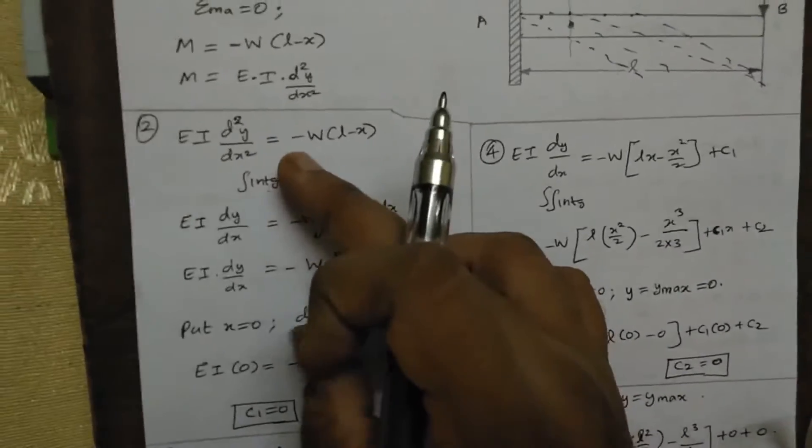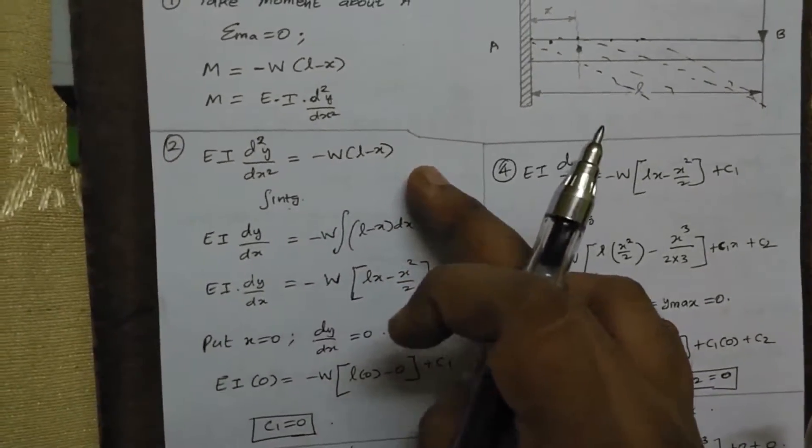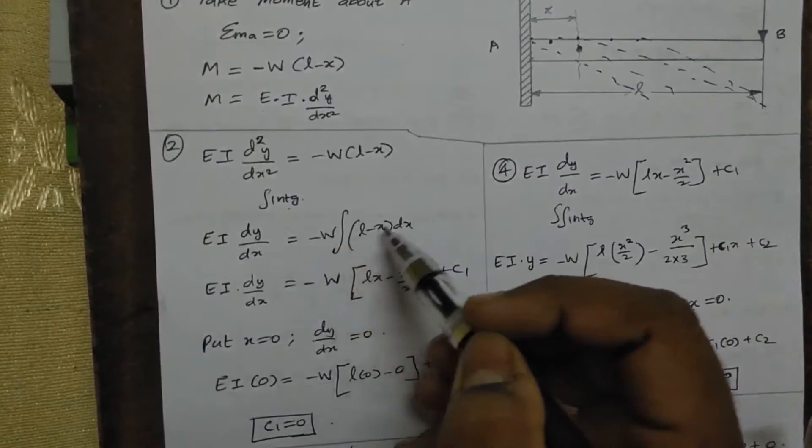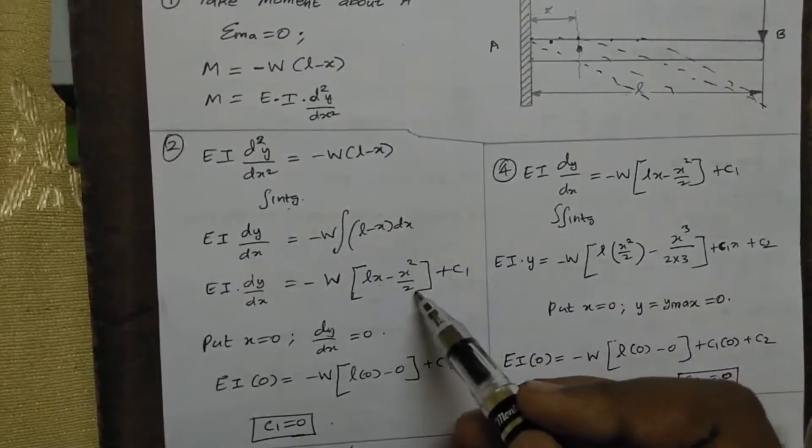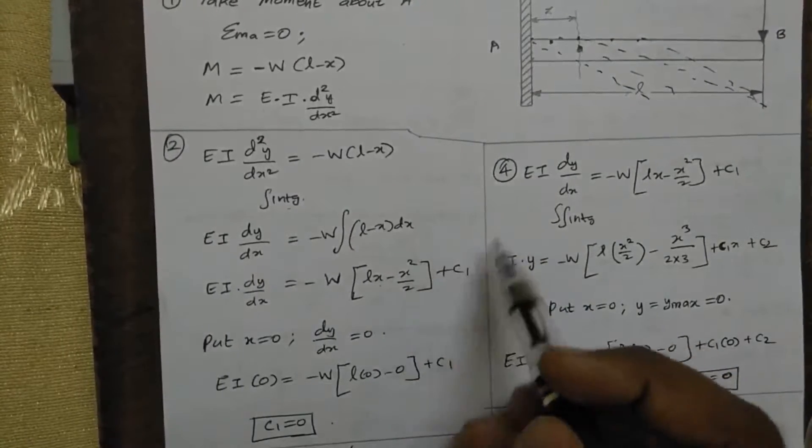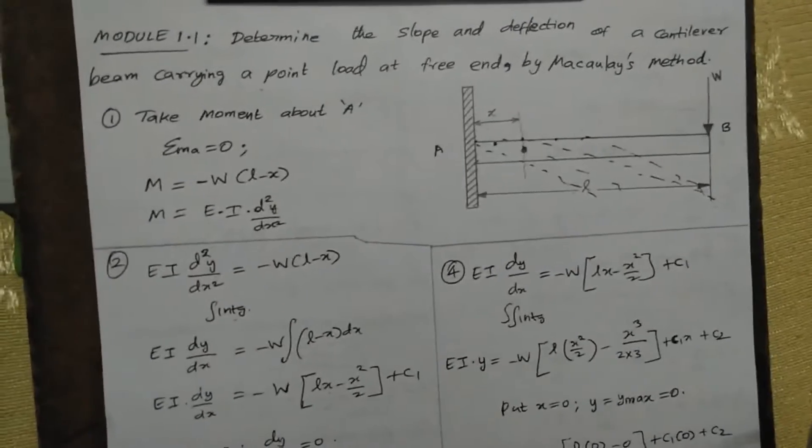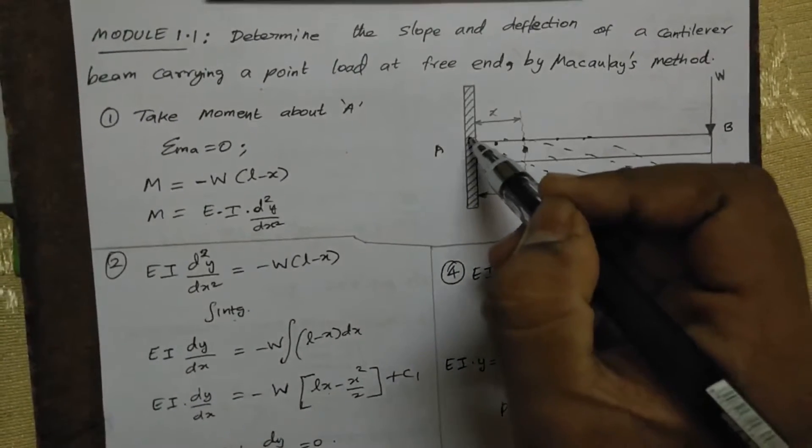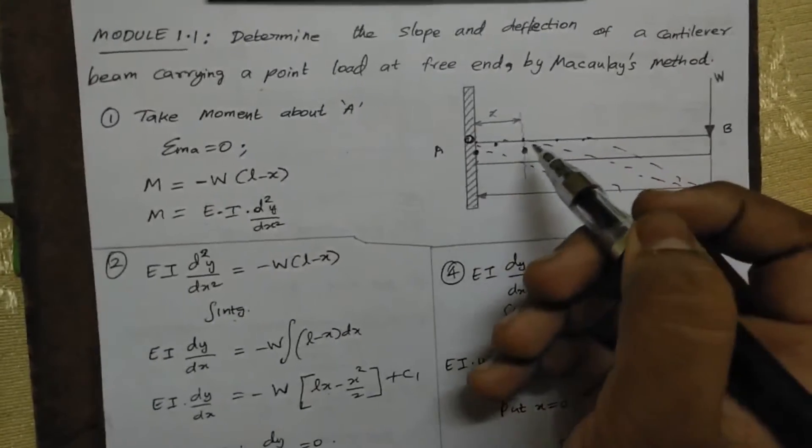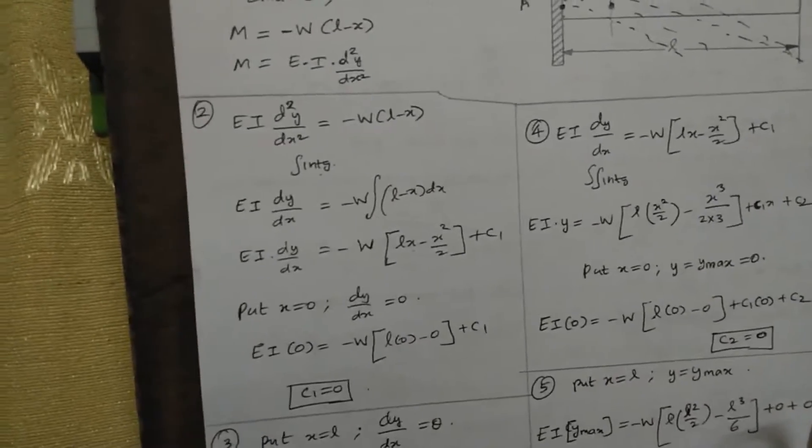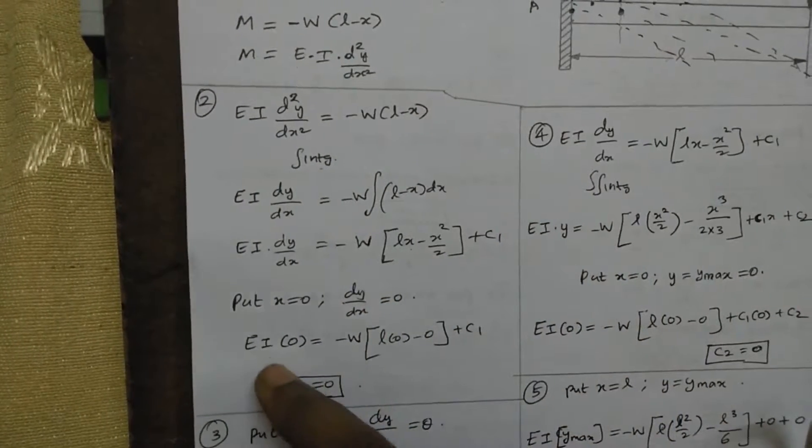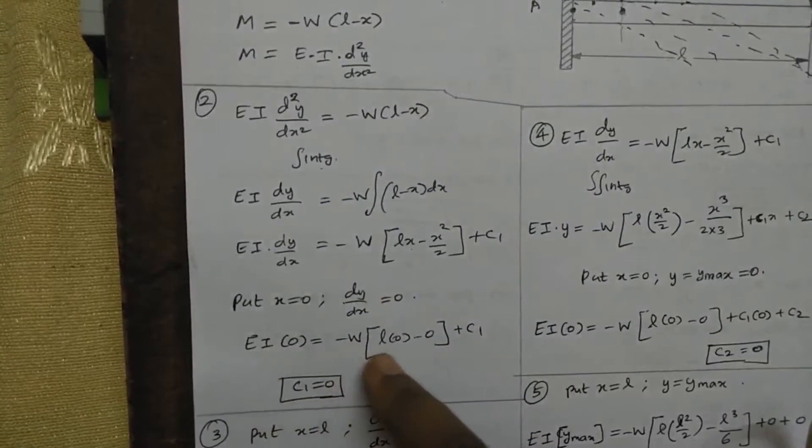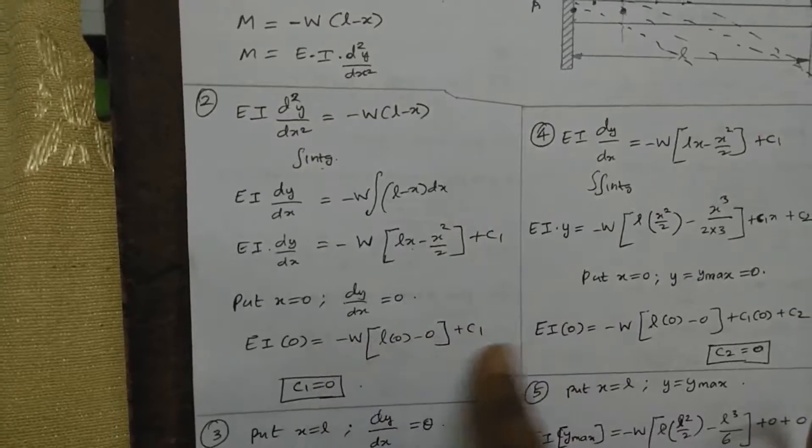First integration: EI times dy/dx equals minus W(Lx minus x²/2) plus C1. Integrating L minus x times dx gives Lx minus x²/2. At x equals 0, dy/dx equals 0, that is the deflection at the fixed end is zero. So EI times zero equals W times L times 0, therefore C1 equals zero.